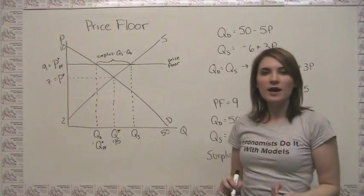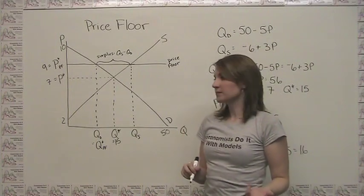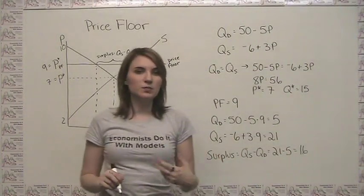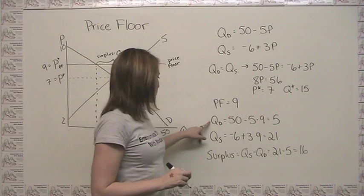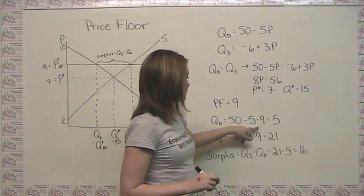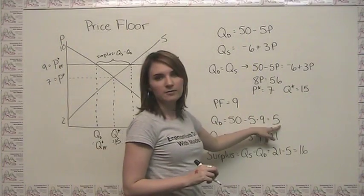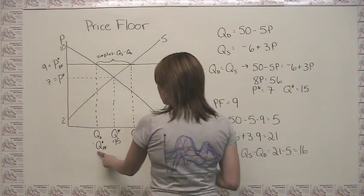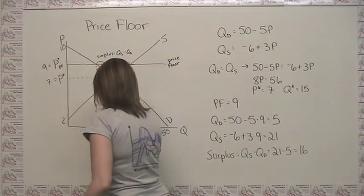At a price of 9, how many units of the item are demanded? Well, we can see that by just plugging a price of 9 into our demand equation. We can say, well, 50 minus 5 times 9 is equal to 5. So our quantity demanded here is equal to 5.